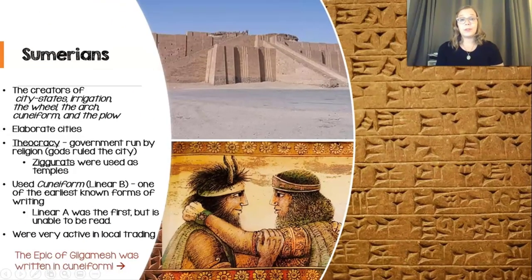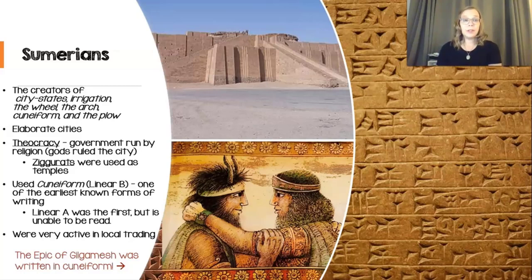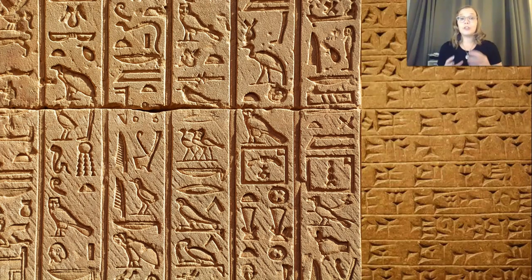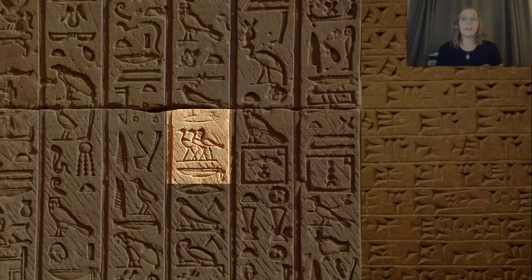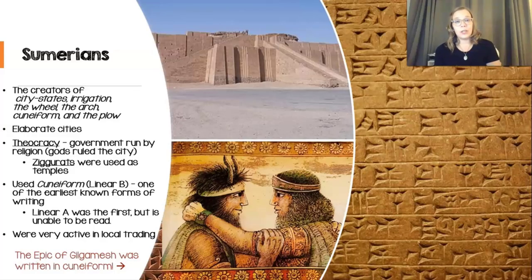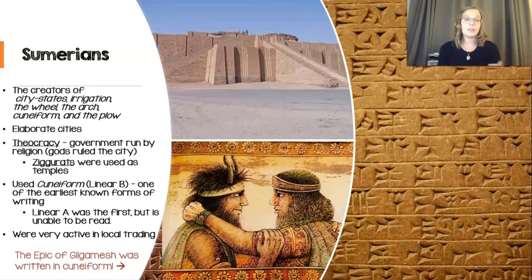Cuneiform is one of the first known systems of writing that we have. We've learned about hieroglyphics and hieratic script in ancient Egypt, but the Sumerians were using cuneiform. Hieroglyphics were mainly pictographs — pictures that represented different things — whereas cuneiform is a little closer to what we use now in the sense that it's symbols that represent sounds that make words. There are scholars today that can actually read this script.